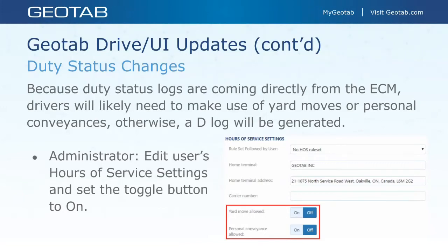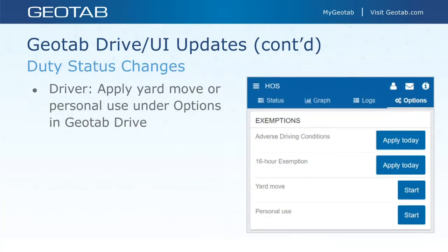You want to make sure you are taking advantage of yard moves and personal conveyances. To set that up from the admin side, it's done by users — go into the user, edit their hours of service settings, and make sure yard move allowed and personal conveyance allowed are turned on. Otherwise you're going to have a lot of drive logs popping up. Previously you could go in and edit or remove those drive logs if you knew they were just moving in the yard, but pretty soon you're not going to be able to do that anymore. From the driver side, you can apply a yard move or personal use under the options when logged into the app. Strongly recommended — get your drivers into the habit of using these.